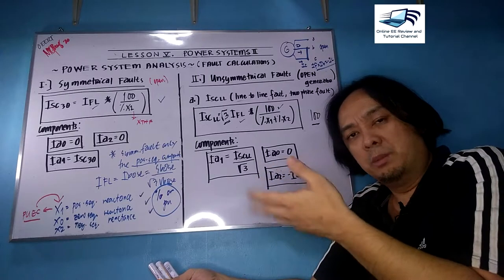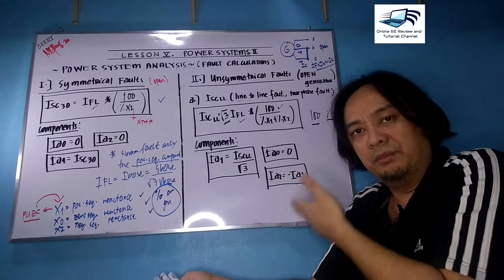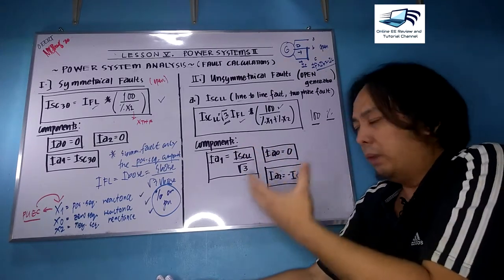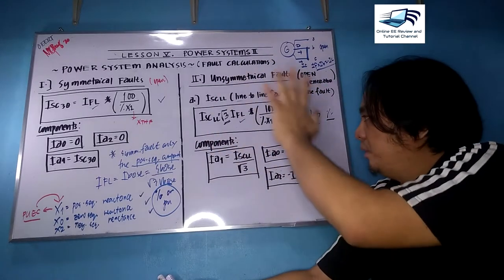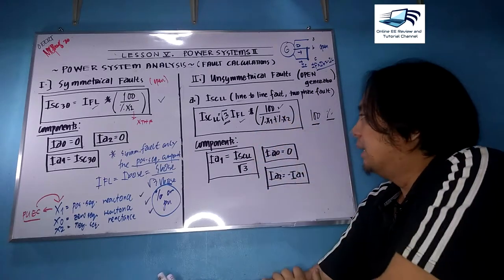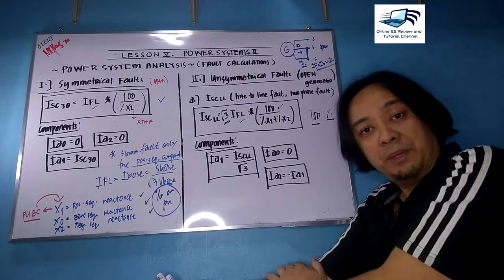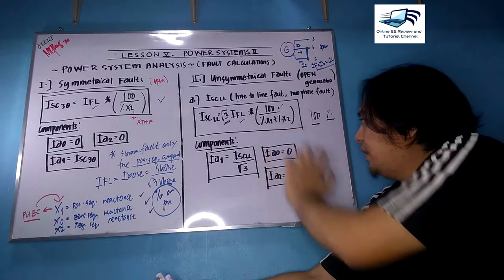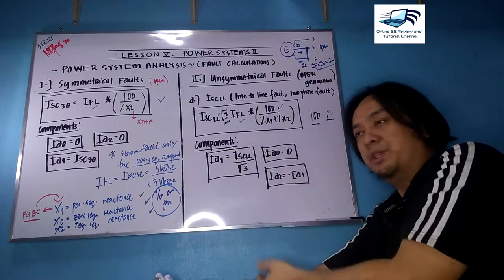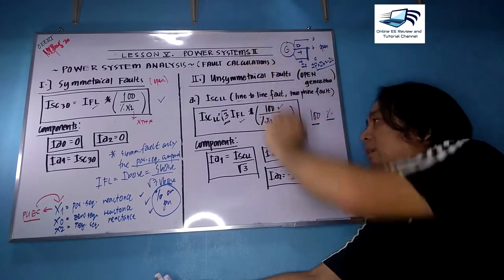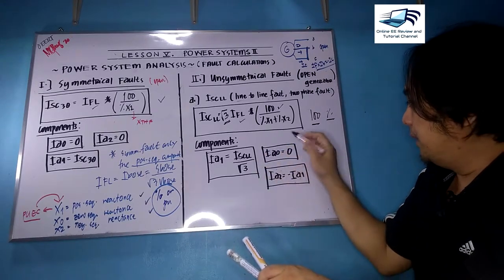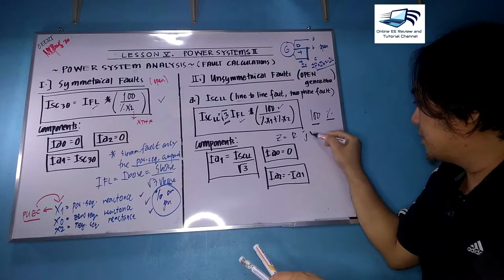There is about a five percent error if you include minimal resistances on the transmission lines. But for a bigger power system, if you want to get the Thevenin reactance in terms of reactance only, you have a little error. This is for simplification purposes. It can be X, R, or Z. When you say impedance, you are considering both R and X.